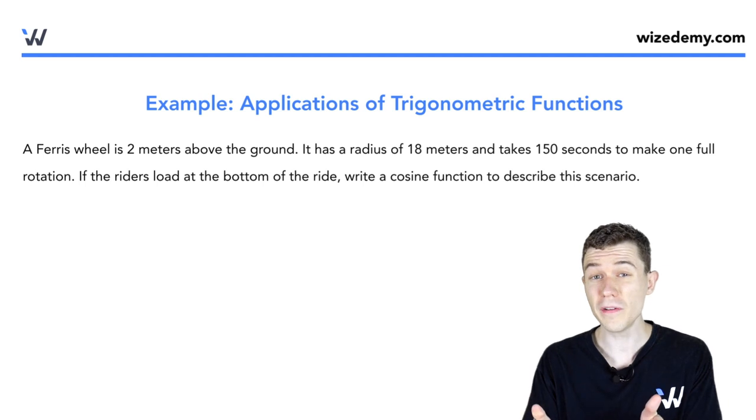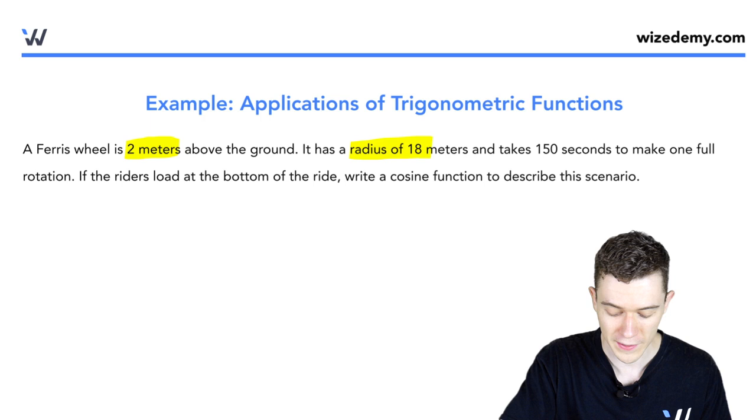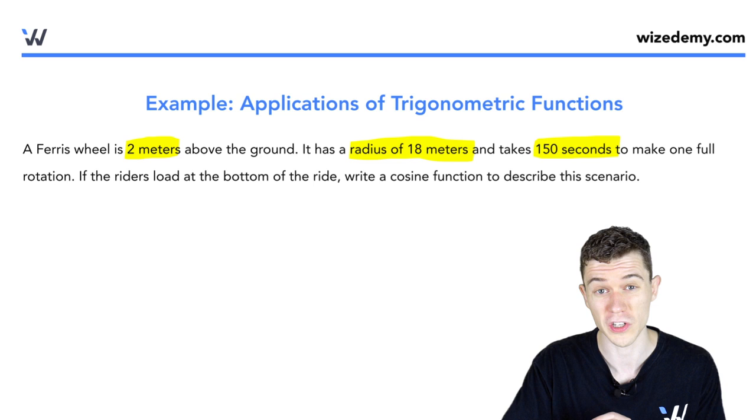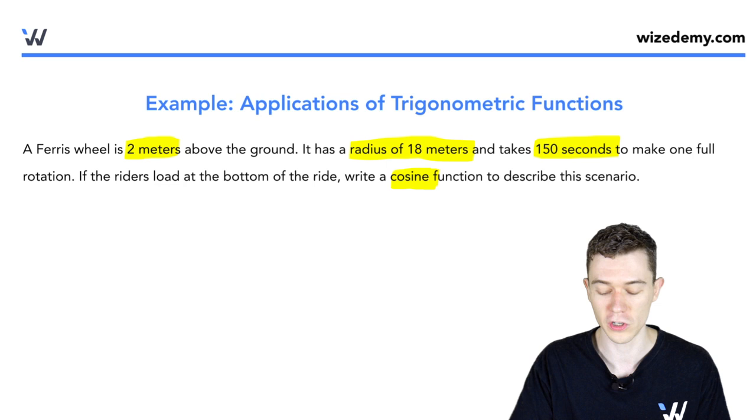Here we have a Ferris wheel, two meters off the ground. It has a radius of 18 meters and takes 150 seconds to make a full rotation. Its rider loads at the bottom. We want to know what's a cosine function to describe this scenario.